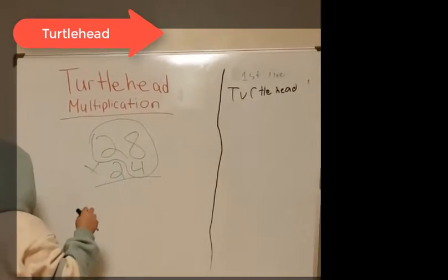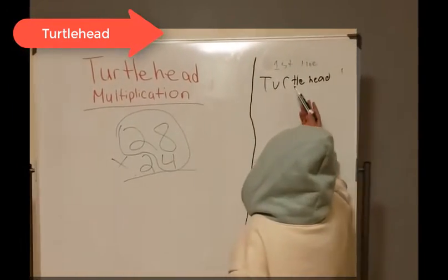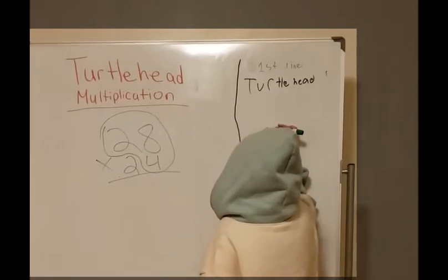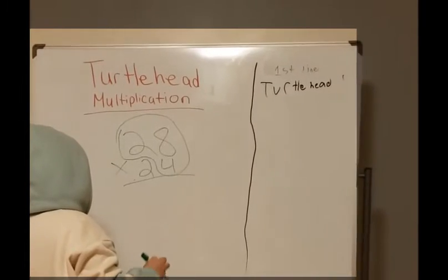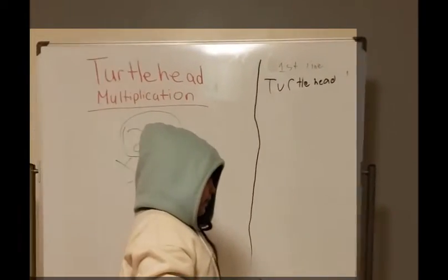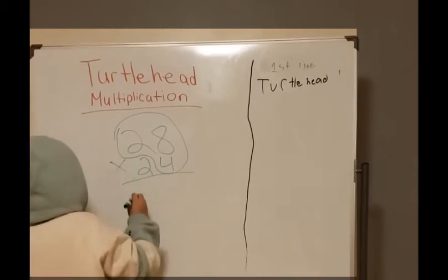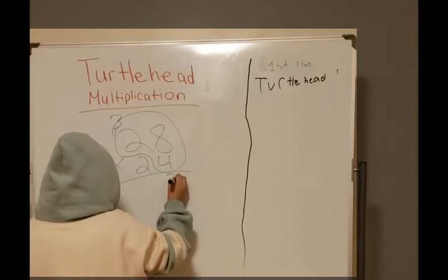Now I will write first line because it's my first line. Now I am going to do 4 times 8. 4 times 8 equals 32. I would put the 3 up here and the 2 down here.